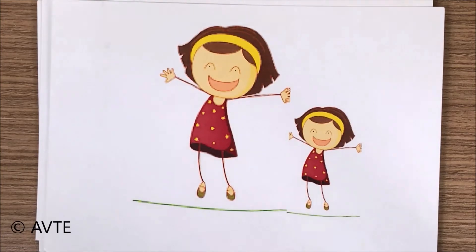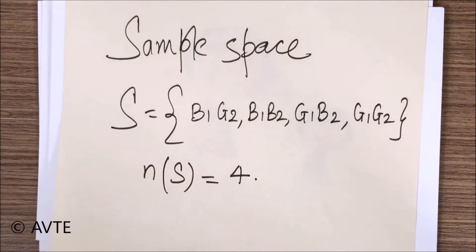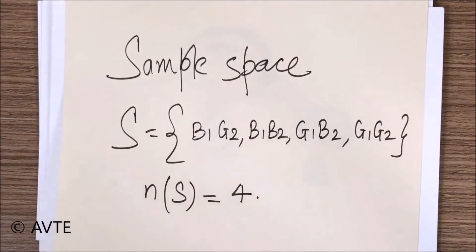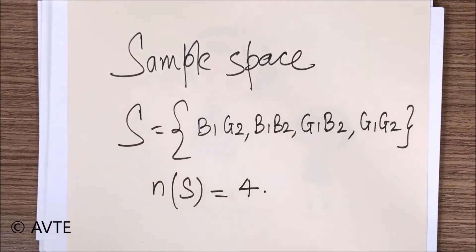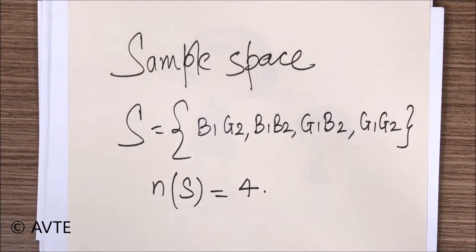And finally both could be girls — the younger as well as the elder one is a girl. So we have four possibilities. The sample space will be B1G2, B1B2, G1B2, and G1G2, where 1 stands for the elder one and 2 stands for the younger one. The maximum possible outcomes will be four.